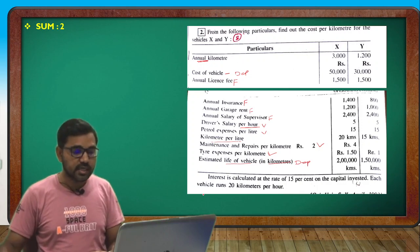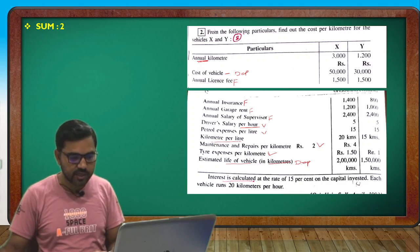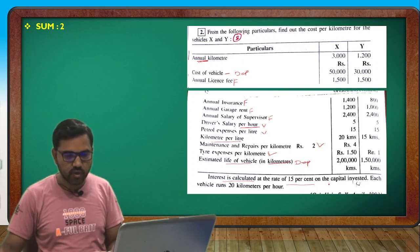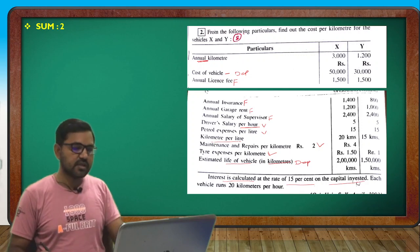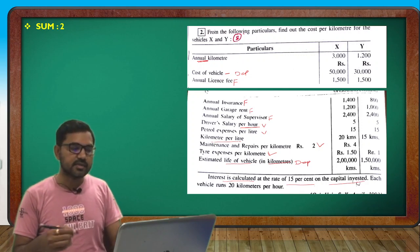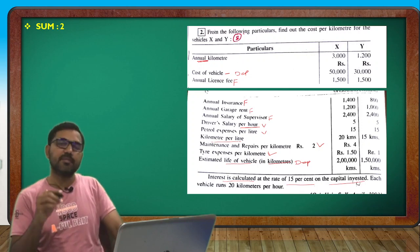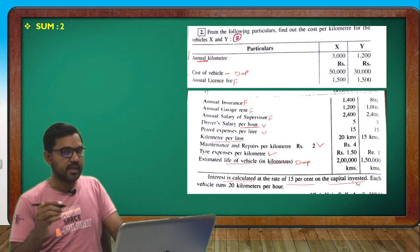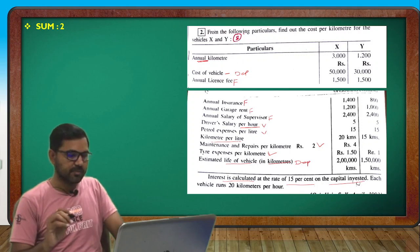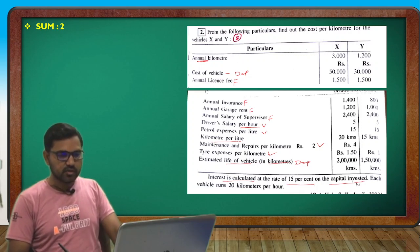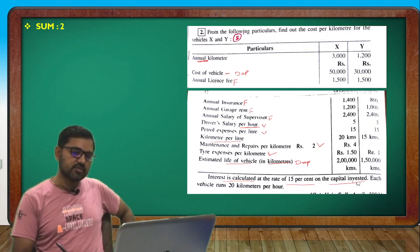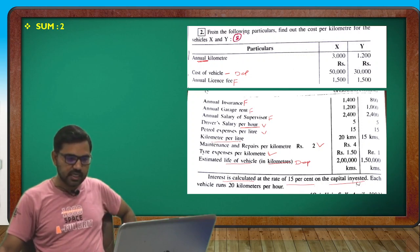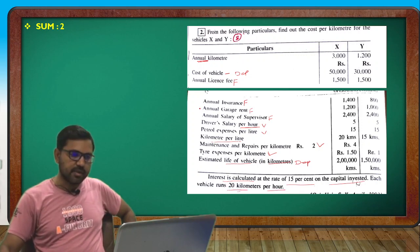Interest is calculated at the rate of 15% on capital invested. However, the first lesson note says interest on capital is to be ignored. Each vehicle runs 20 km per hour, so we use this to convert driver salary per hour to per km.